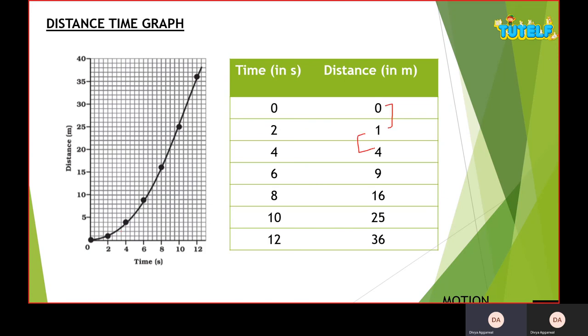The other thing is that the distance increases by 1 meter gaps: 3, 5, 7, 9 and 11. And the time interval is 2 seconds. So I can say unequal distance in equal interval of time. So the motion here is non-uniform.